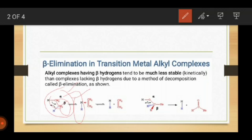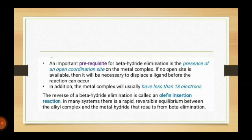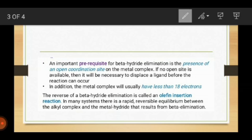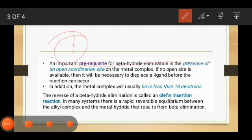An important requirement for beta hydride elimination is the presence of an open coordination site. There must be an open coordination site available. If there is an open coordination site, then beta elimination is possible. If no open site is available, there is no way to displace the ligand to form the coordinating site, and beta elimination cannot occur.